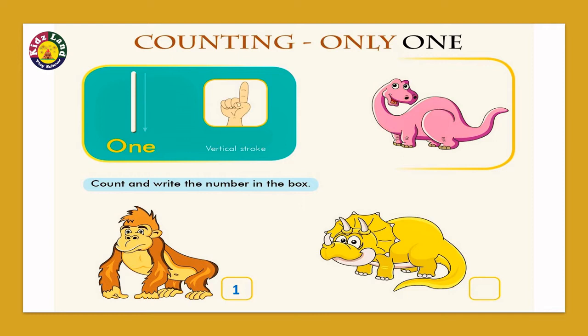And how many dinosaurs are there? One yellow dinosaur. And what should we write in the box? It is one again. So this is all about number 1.